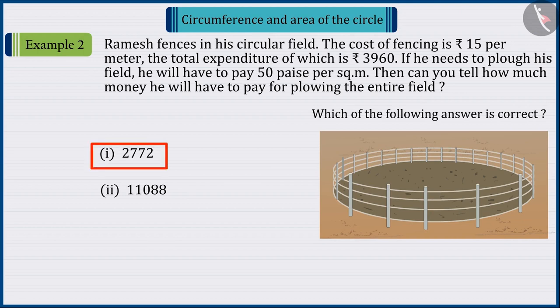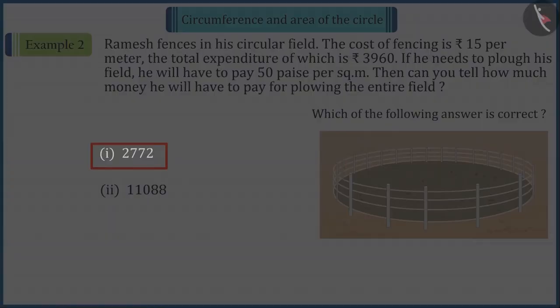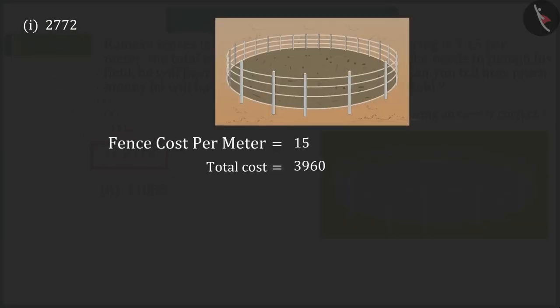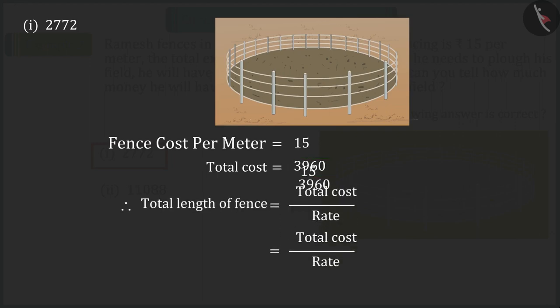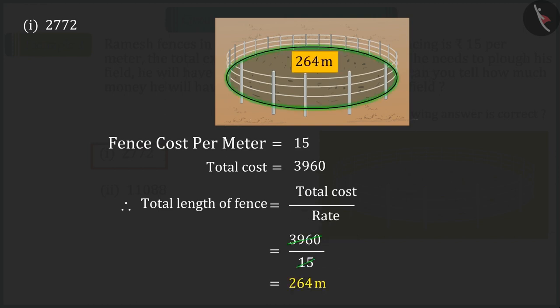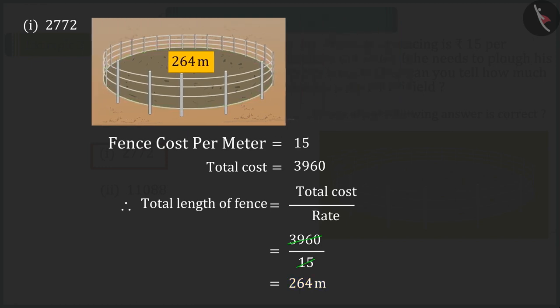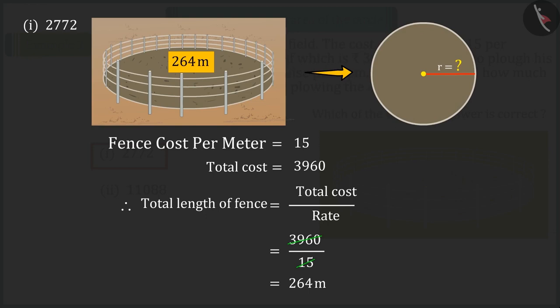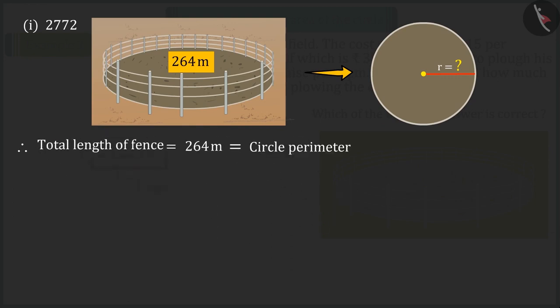Come, let's discuss option 1. It is given that the total cost of the fence at the rate of 15 rupees per meter would be 3,960 rupees. This means that the total length of the fence is 264 meters. So now, can you find the radius of a circular field? Absolutely correct! To find the radius, we will take the help of the formula of circumference of the circle.